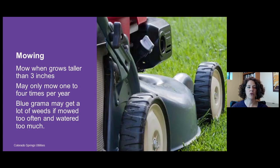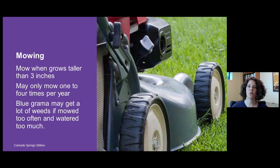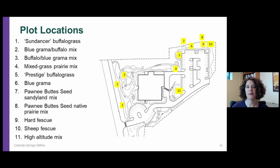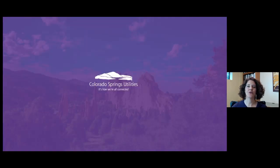For mowing, you can mow both grasses when they get about three inches tall or taller. You can leave them tall throughout the growing season and mow just once in February to remove dead material, or mow up to once per month during the growing season. Note that blue grama may get a lot of weeds if mowed too often or watered too much, so let it grow a little taller. If you'd like to see these grasses in person before deciding, visit our WaterWise demonstration garden at 2855 Mesa Road — free and open to the public during daylight hours any day of the year. Thanks for viewing this webinar and best of success with your project.